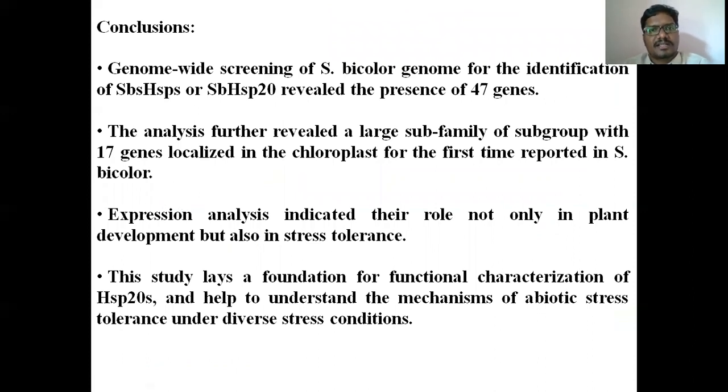Coming to conclusions. Based on the present work, we have derived the following conclusions. We have reported 47 SbHSP20 genes and we found very interesting thing that of 47, 17 are localized to chloroplast. Based on their expression analysis, based on the digital expression, followed by the real-time expression, we found that these genes are not only expressed in particular to heat, but they are also expressed to salt, drought, and cold tolerance also. So we can use these genes, the genes that are highly expressed, for developing new transgenics for different abiotic stresses.